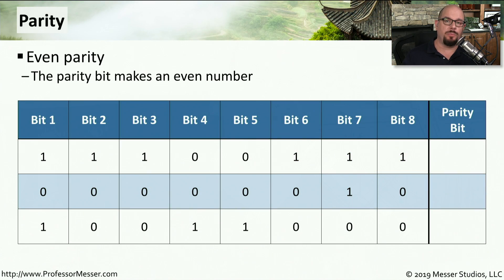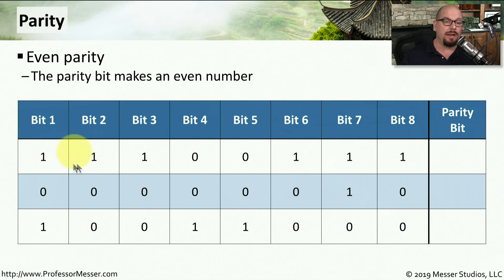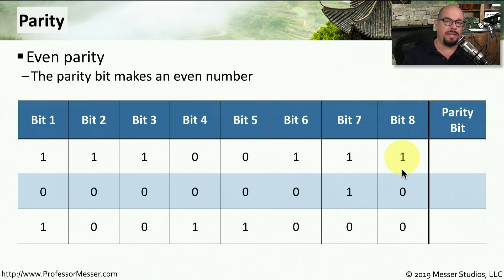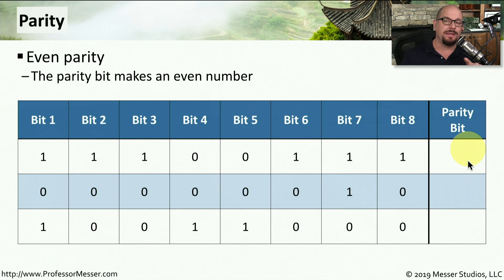Most memory uses a parity process called even parity. It adds up all the bits in an 8-bit byte, determines if that is an odd or even number, and adds a parity bit at the end to ensure that the total of the byte and the parity bit together is an even number.